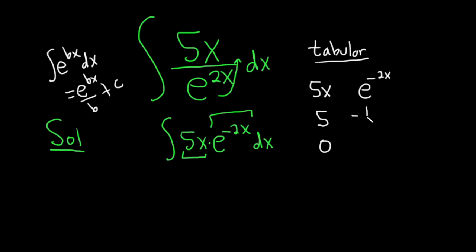And then you do it again. You divide by negative 2, which again is the same thing as multiplying by negative 1 half. So 1 fourth e to the negative 2x.